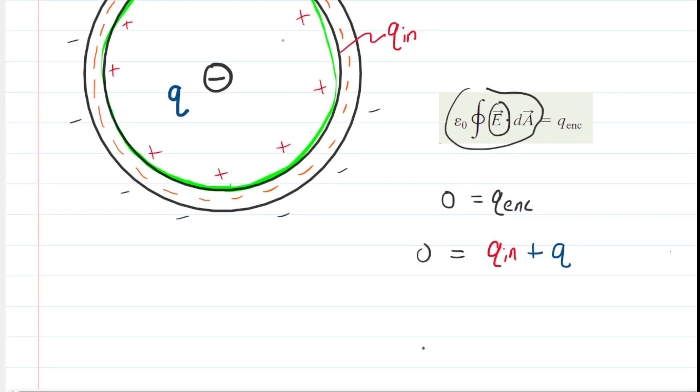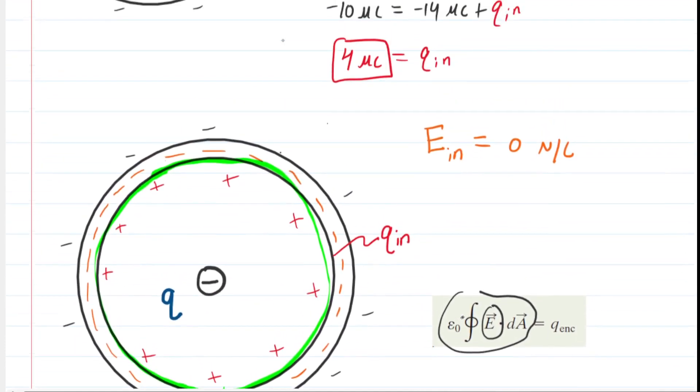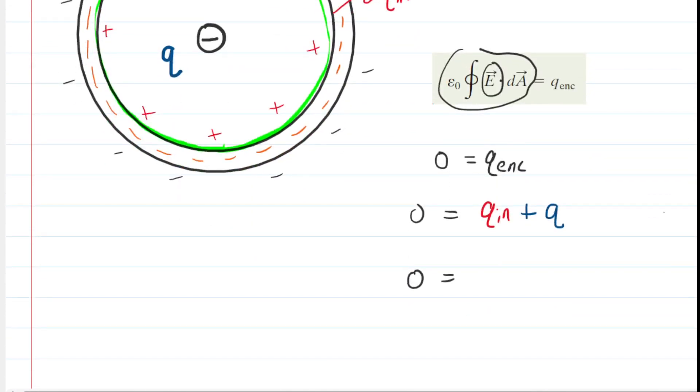Well, this is great because we already know the value of Q in. We figured that out in part A of the question. We can scroll back up. It was 4 microcoulombs. So we're going to fill that in for Q in. And then it's a very simple matter, isn't it, to solve for Q. We just subtract the 4 microcoulombs from both sides. And we can see that Q is going to equal negative 4 microcoulombs. So that's the answer for part B. That's the amount of charge located on that little charge that was placed on the hollow of our conducting shell.